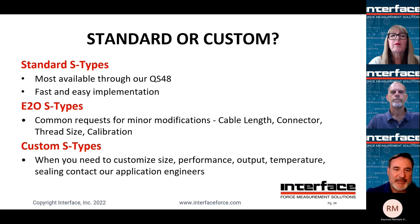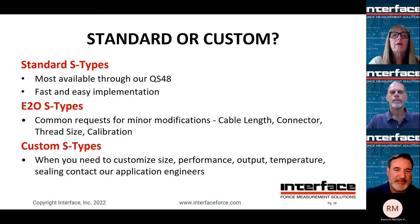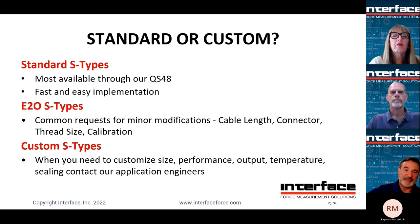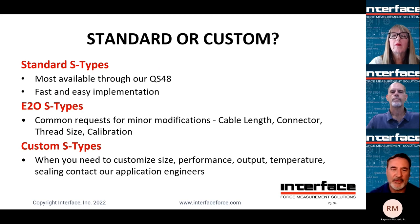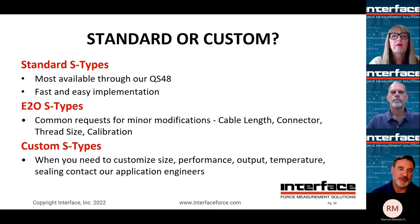To summarize ordering options: our standard S-Types are mostly available through our Quick Ship 48 program — they can be ordered online, PO placed, and shipped within 48 hours. For engineer-to-order, some common requests are cable lengths, connectors, special thread sizes, and special calibrations, including calibrating with rod-end installations. Custom S-Types involve customizing size, performance, output, temperature, and sealing. In these scenarios, just run that through your sales channel — whether distributor, sales rep, or applications engineer — and we'll get a good solution figured out for you.